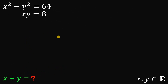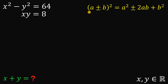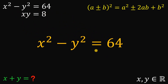The key to answer this kind of question is this identity. If we have a plus or minus b raised to the power of 2, we can expand this as a squared plus or minus 2ab plus b squared. So let's take the equation x squared minus y squared equals 64, and we are now ready to use this identity.